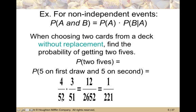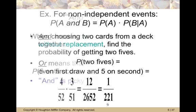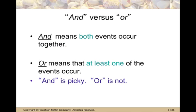Our denominator automatically goes down by one because we've drawn one card from the single deck. If that card was a five, now there are only three fives remaining out of the 51 cards. So the probability of drawing a five on the second card given that you drew a five on the first card is three out of 51. That gives us four over 52 times three over 51, which equals 12 out of 2652, reducing down to one over 221.